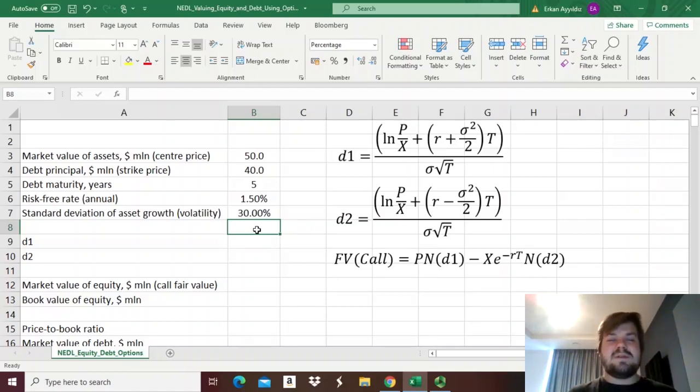What it means is that if the company doesn't have enough assets when its debt matures to pay off 40 million dollars to its creditors, then the creditors get pretty much everything the company owns, they liquidate corporate assets altogether, and the shareholders are left with nothing.